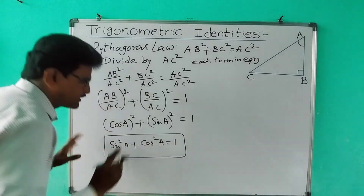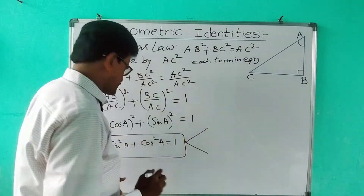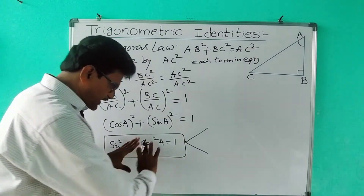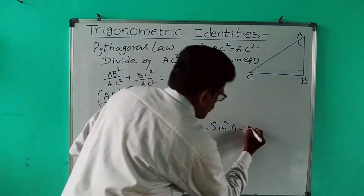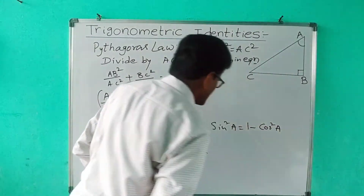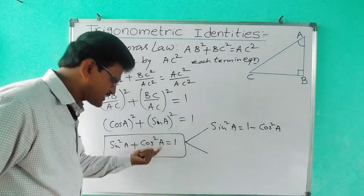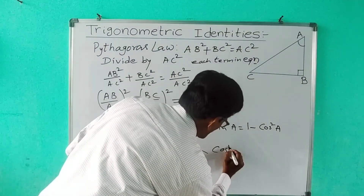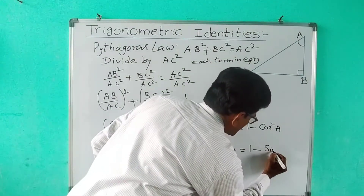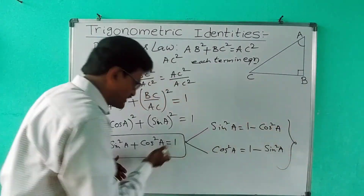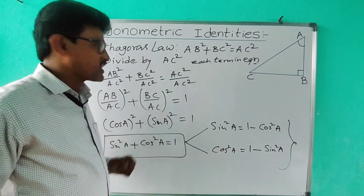Remember this identity. From sin²A + cos²A = 1, we can derive two more equations. What is sin²A? It equals 1 minus cos²A — send cos²A to the RHS. Similarly, cos²A equals 1 minus sin²A. So remember these three forms; they are very, very important. We will also solve some problems using these identities.